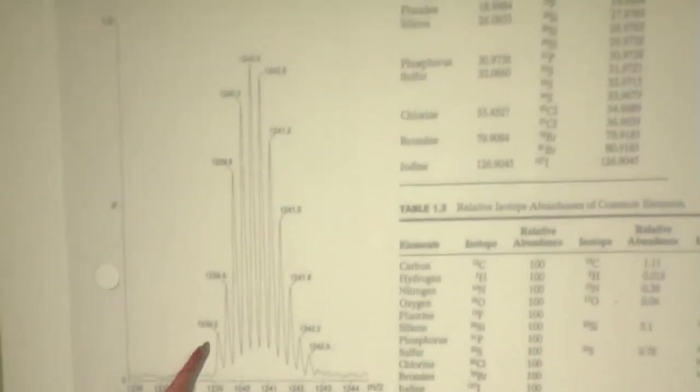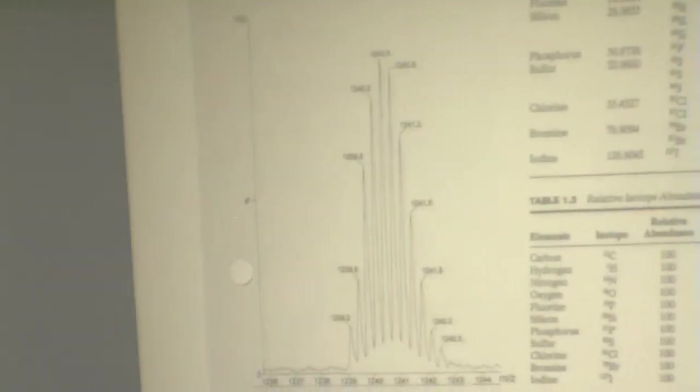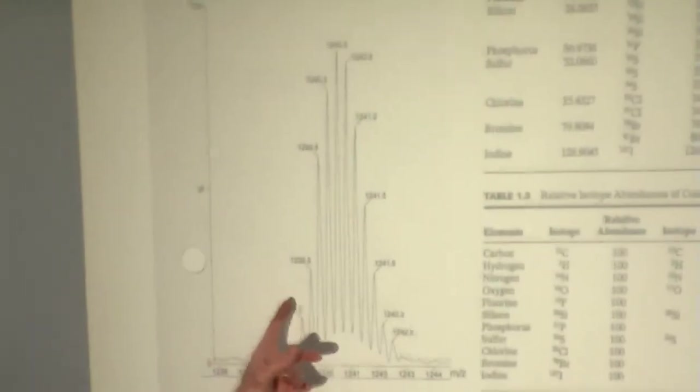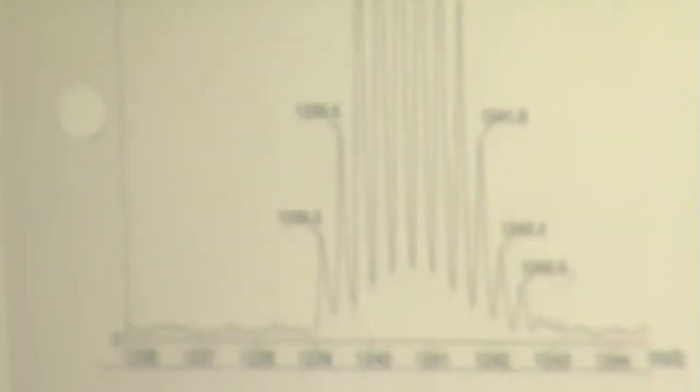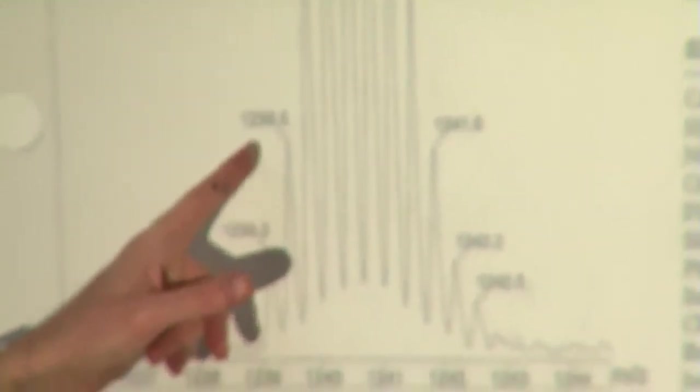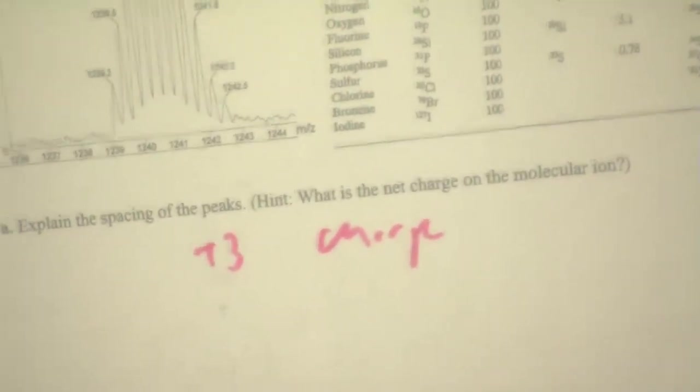The first thing one does in looking at this spectrum is say something's interesting here. You look and say the lines aren't spaced by units, what's going on? The lines are spaced a third of a mass unit apart, point three apart and every now and then point four apart. So this is a plus three charge.